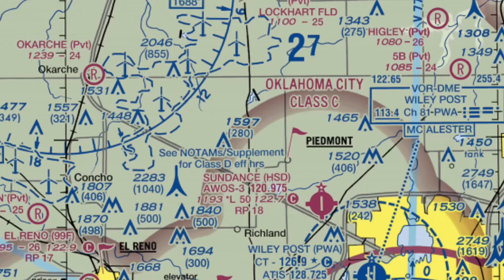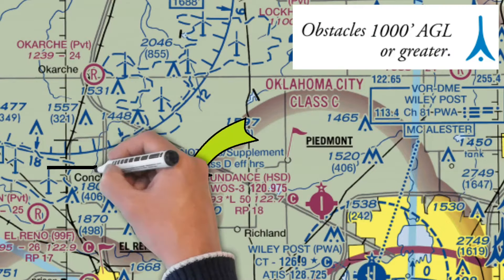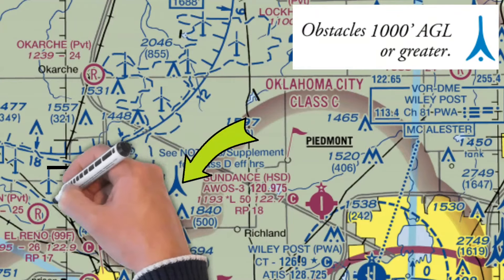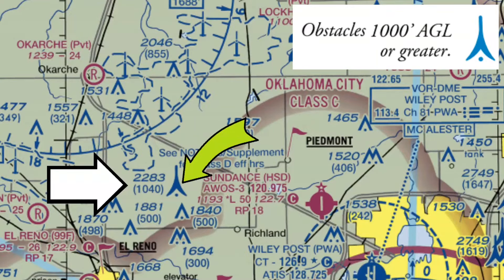Now check out this monster obstacle. This is a symbol you'll see when the tower is taller than 1,000 feet AGL. Notice they tell you exactly where the top of the tower is, the same way they do the smaller ones.